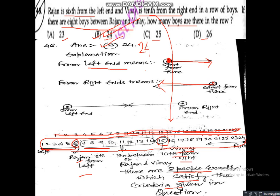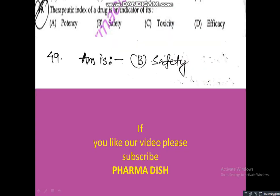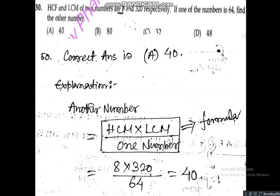So the correct answer for Q48 is 24, not 23. Moving on — question 49: the therapeutic index of a drug is an indicator of potency, safety, toxicity, or efficacy? The correct answer is Option B — safety.